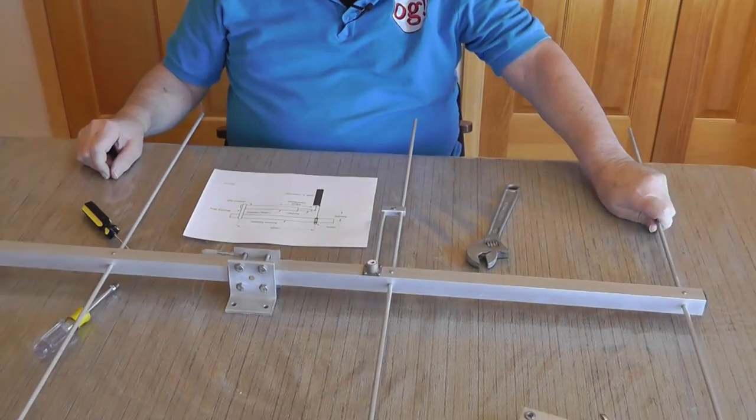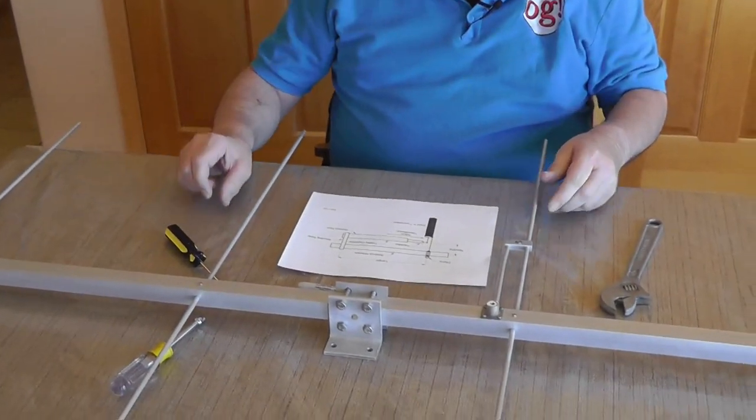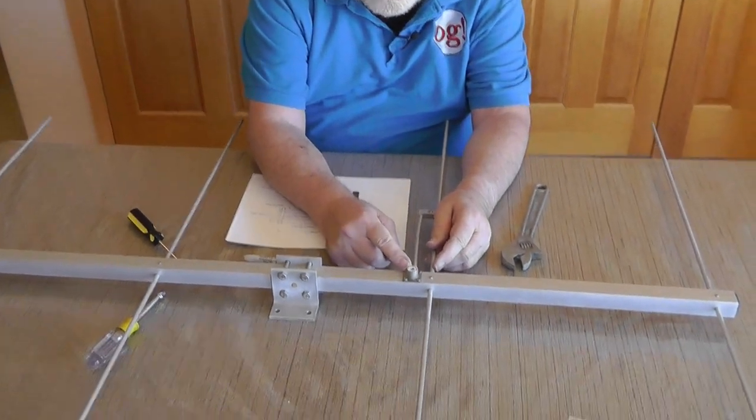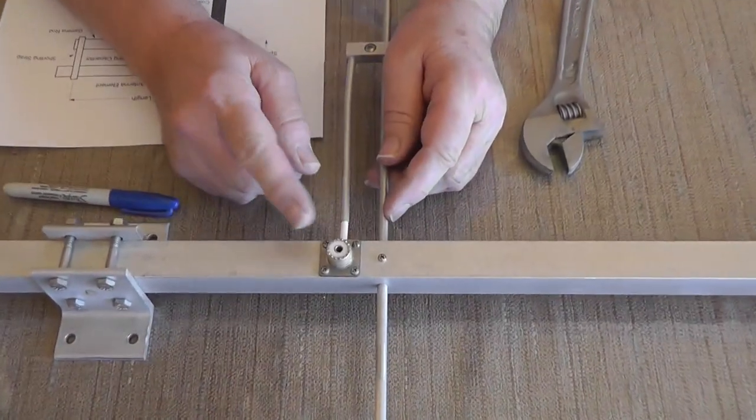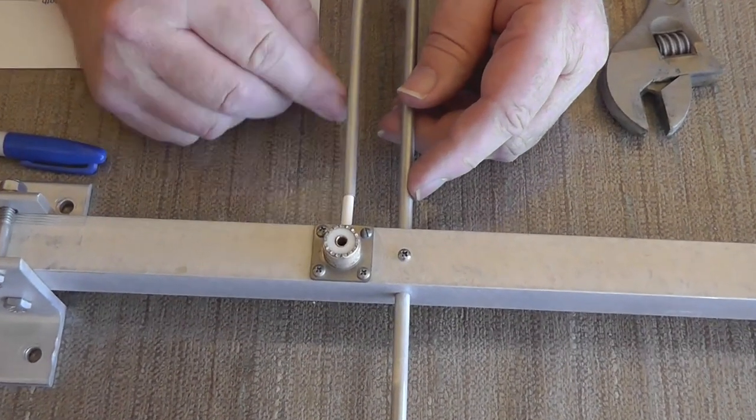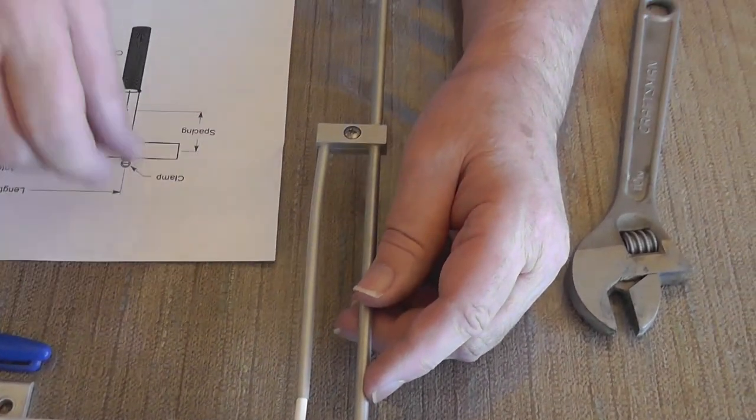So this is the reflector, these are two directors, this is the driven element. Now the nice thing about a gamma match is that it allows you to feed with unbalanced coax and it will match to a balanced line.